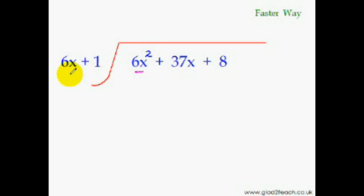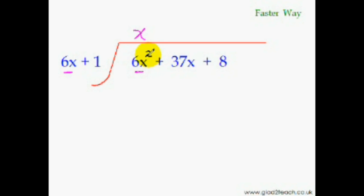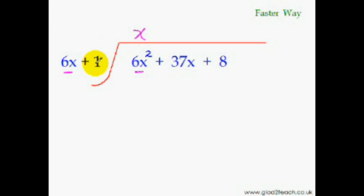Divide the first term of the dividend by the first term of the divisor to get the first term of the answer. 6X² divided by 6X gives us X — that is the first term. Divide the number part by the number part and the variable part by the variable part: 6 divided by 6 is 1 (we don't write 1 explicitly), and X² divided by X is X. Now, put the opposite of the constant term here: put minus 1.